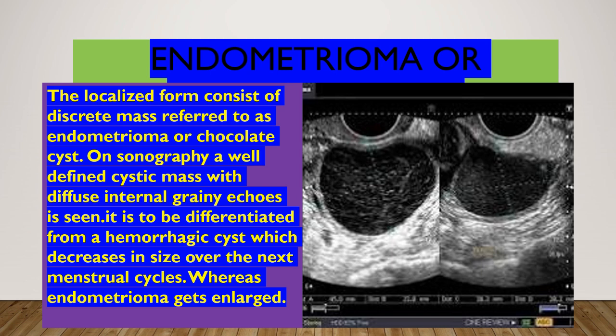The localized form consists of a discrete mass referred to as an endometrioma or chocolate cyst. On sonography, it appears as a well-defined cystic mass with diffuse internal ground-glass echogenicity. It is to be differentiated from a hemorrhagic cyst, which decreases in size over the next menstrual cycle, whereas an endometrioma gets enlarged.